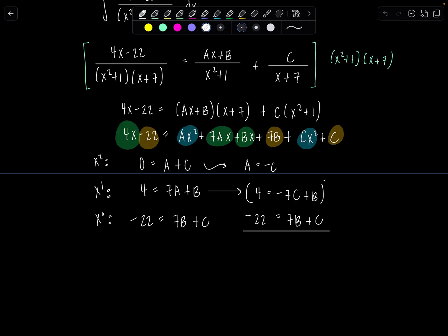Let's multiply this one by negative 7. So then now it's negative 28 equals 49c minus 7b. And I'll add it to the equation directly above. So then now we'll have negative 50 equals, and here's the loveliness, these cancel, 50c.